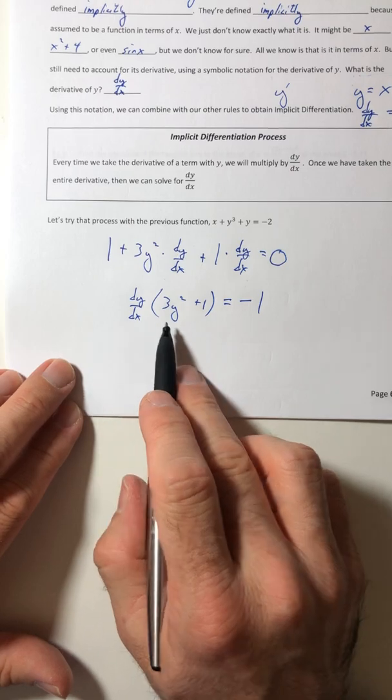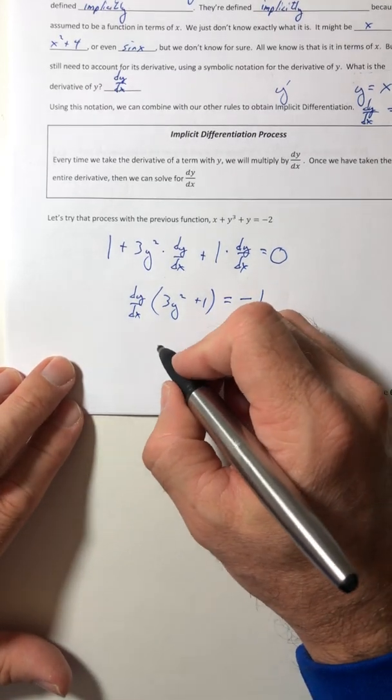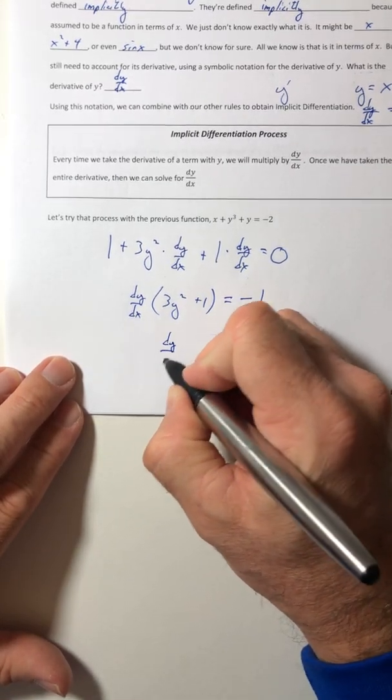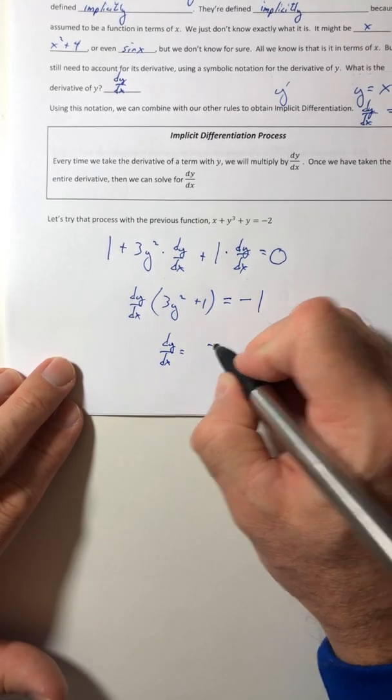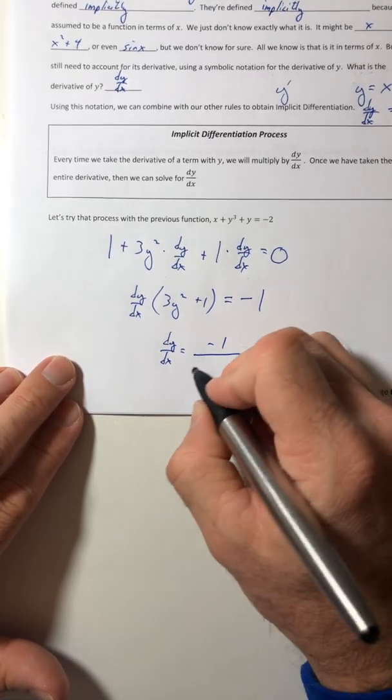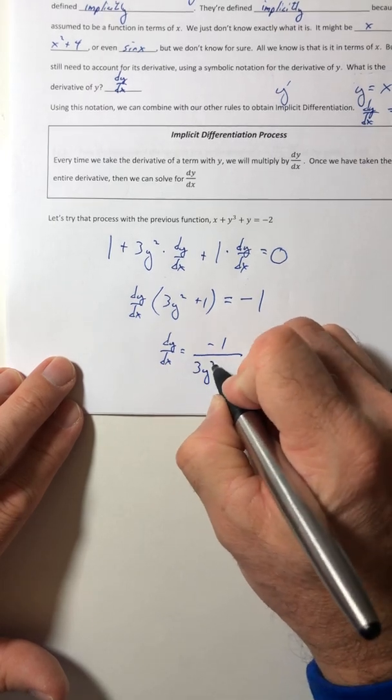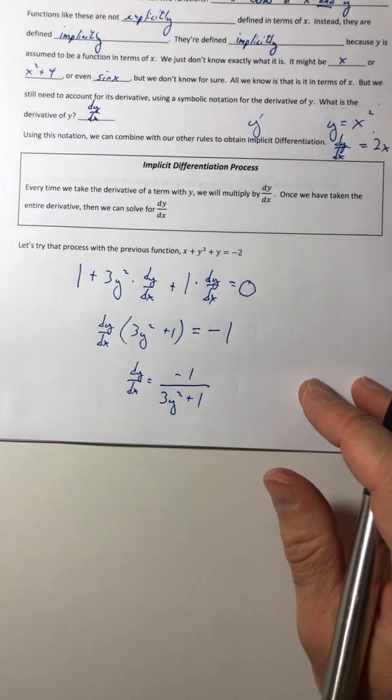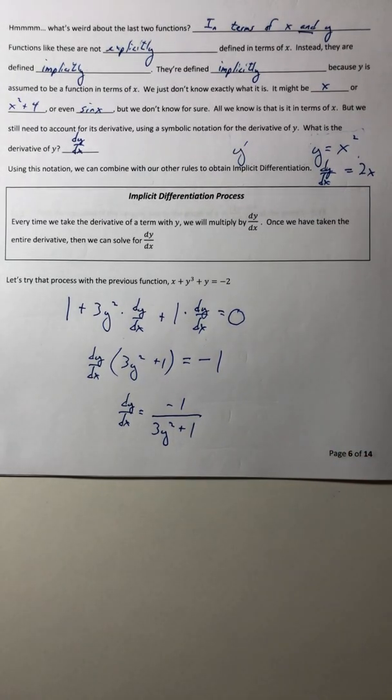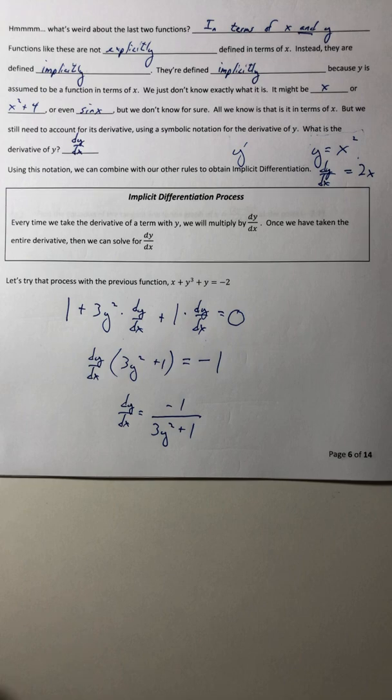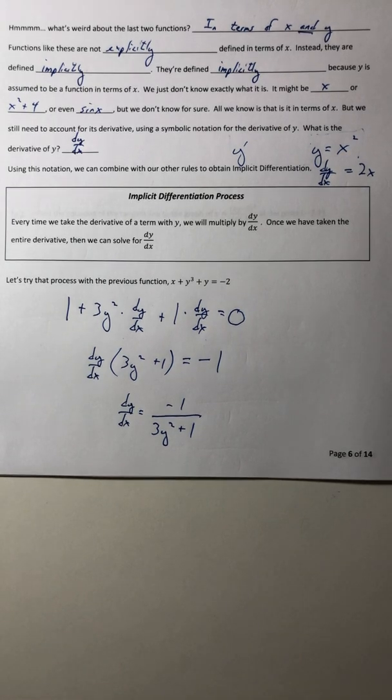So now that I've factored it out, now I can just divide by the stuff in the parentheses. So dy dx is going to equal negative 1 over 3y squared plus 1. Okay, and so that's how implicit differentiation is going to work. So I'll stop the video here, and then we'll try some more examples in the next one.